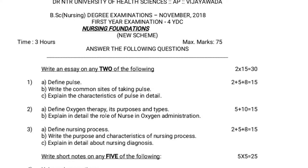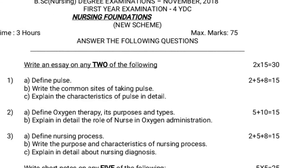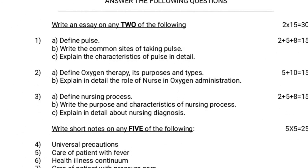This question paper is for the first year BSc Nursing program, November 2018. The maximum marks allotted is 75 marks and the time allotted is 3 hours. The first section is the essay section — write essays on any two of the following. Two questions at 15 marks each equals 30 marks.